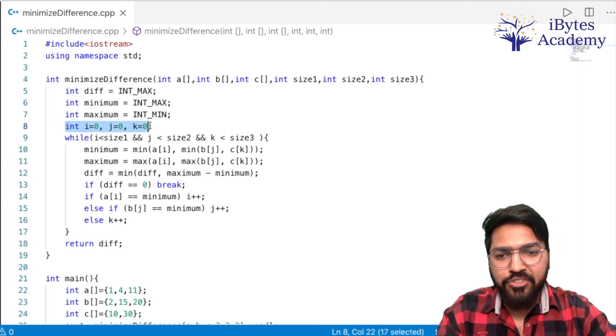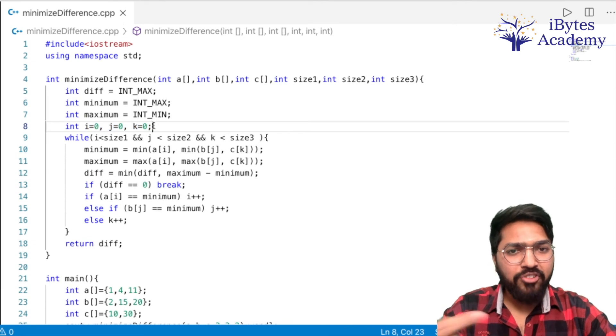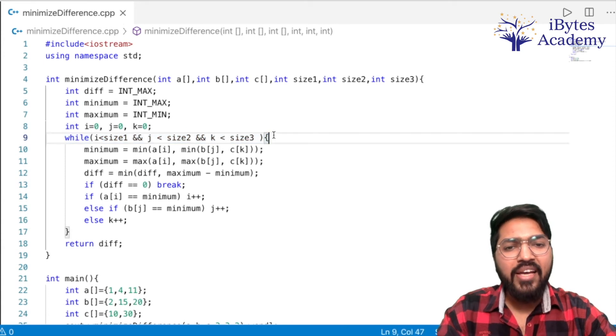Then we have our three iteration variables: i, j, and k. i for first array, j for second array, and k for third array. So we have put the condition here: while i is less than size1, j is less than size2, and k is less than size3.